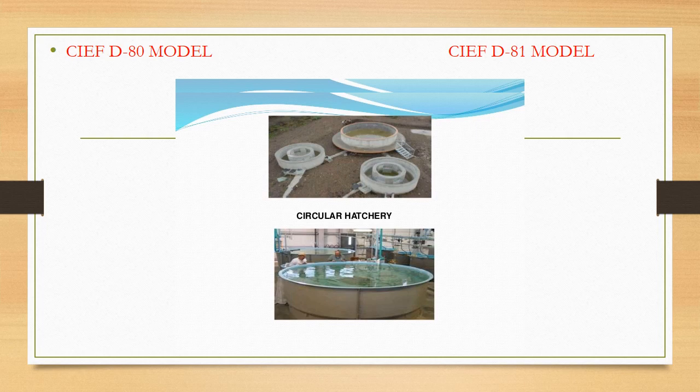In circular modern hatchery, we have the CIFD 80 and CIFD 81 models. The CIFD 80 model is named after the ex-director of CIFD, Dr. S.K. Dhwedy. It has two types of tanks: an incubation tank and an egg collection tank. Its capacity is about 50 lakh eggs. Management of environmental factors such as temperature, oxygen, water flow, and movement of eggs can be easily maintained in this model.